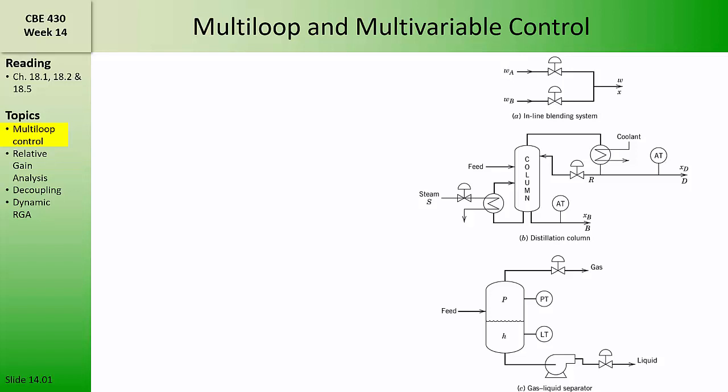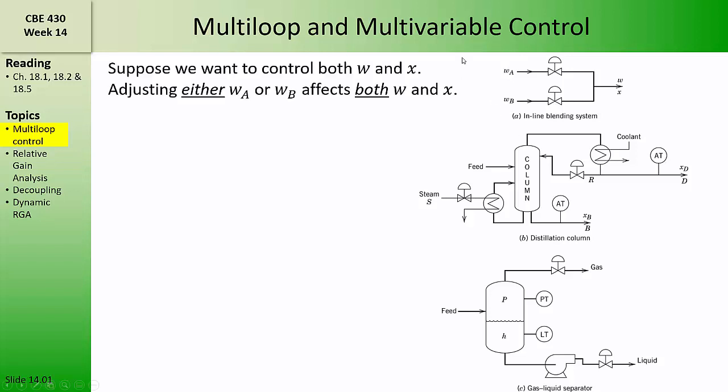When designing control loops for processes that have multiple controlled variables, we need strategies to quantitatively affirm that the controlled variable-manipulated variable pairings are optimized. Even for processes as simple as this blending operation where two streams are mixed in line, we might want to control both the flow rate and the composition.